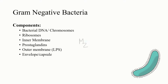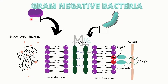Gram-negative bacteria has the following components: bacterial DNA or chromosomes, ribosomes, inner membrane, prostaglandins, outer membrane containing the LPS (lipopolysaccharides), which are the endotoxins, and an envelope or capsule. Here we have a gram-negative cocci and a gram-negative rod — both have the same structure, differing only in shape. The bacterial DNA is shown in black, the dots are ribosomes, then the inner membrane with its lipid bilayer, prostaglandins, outer membrane, and capsule.